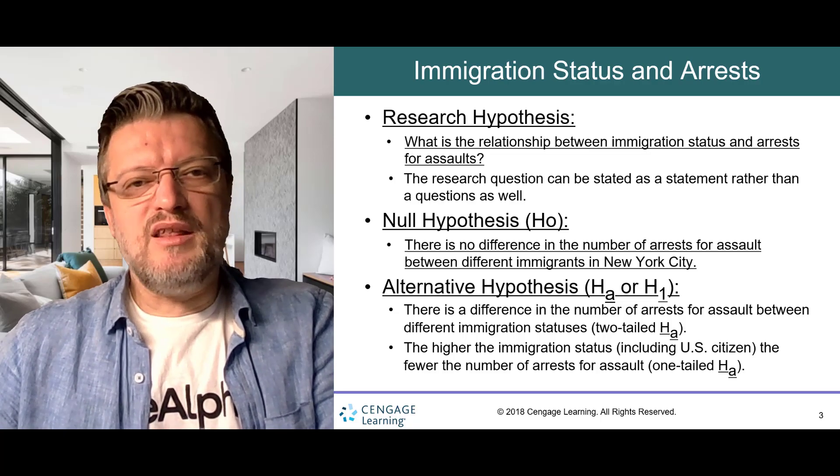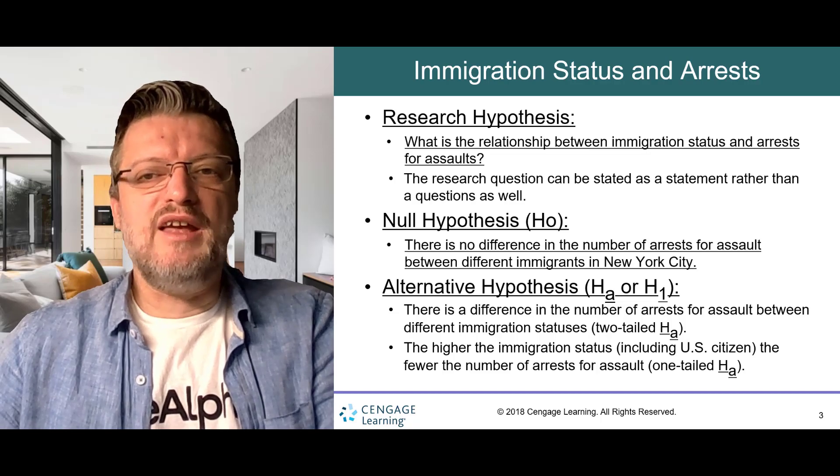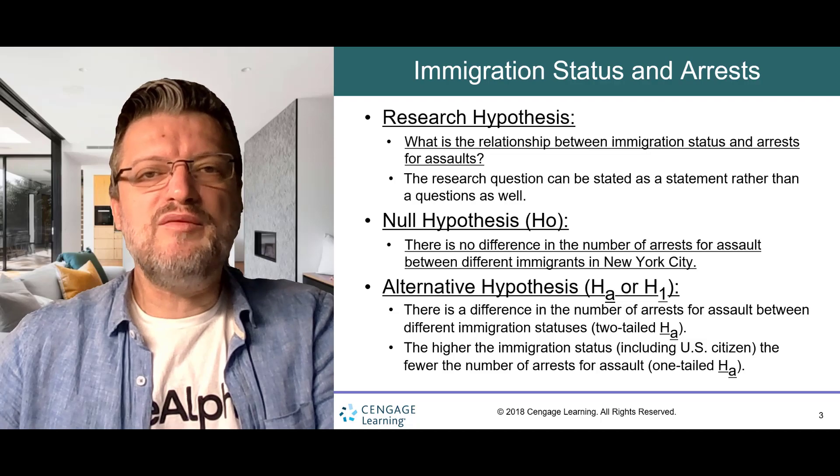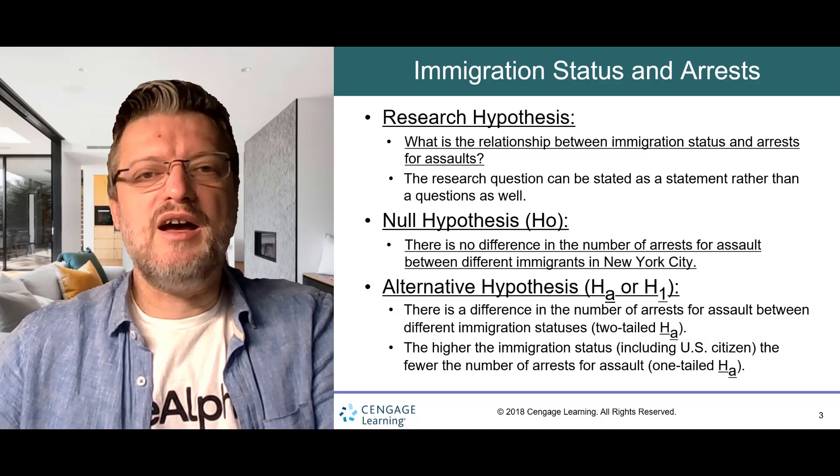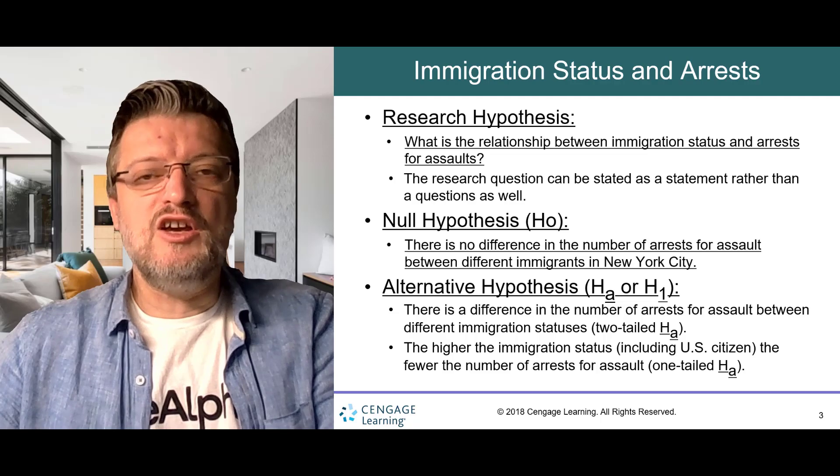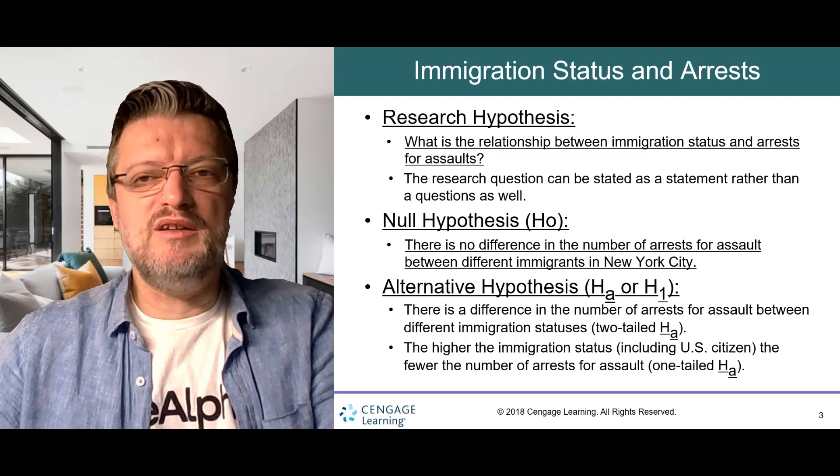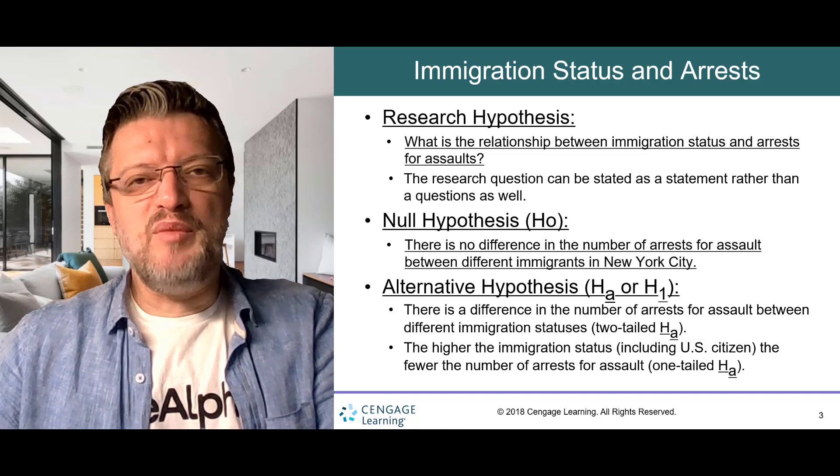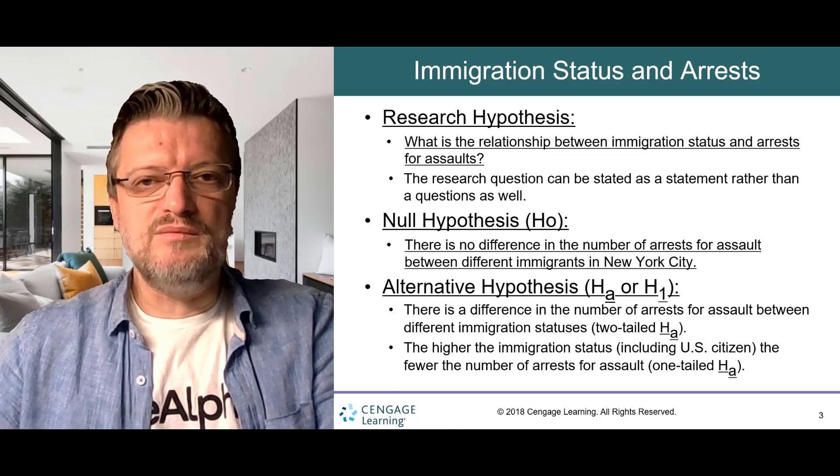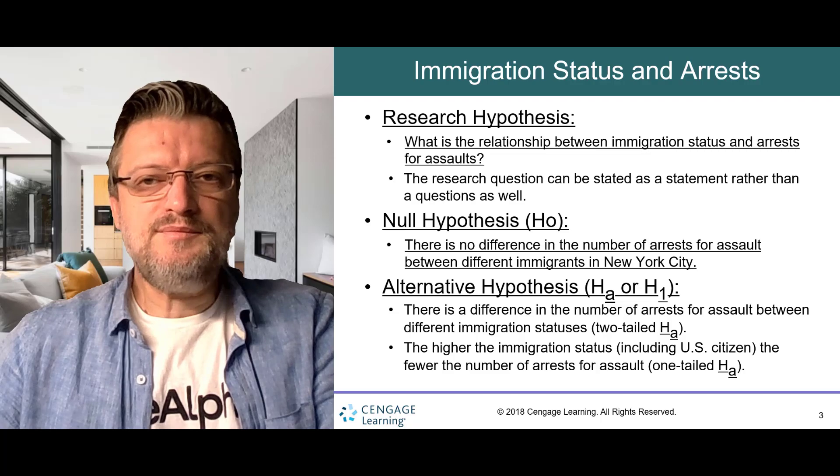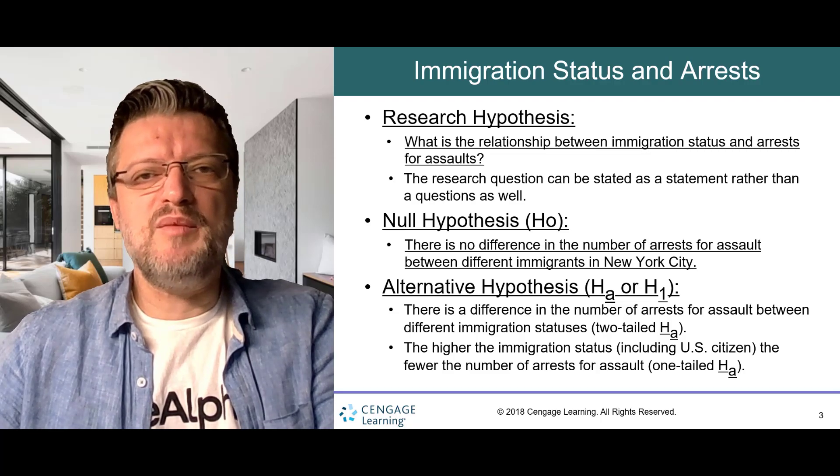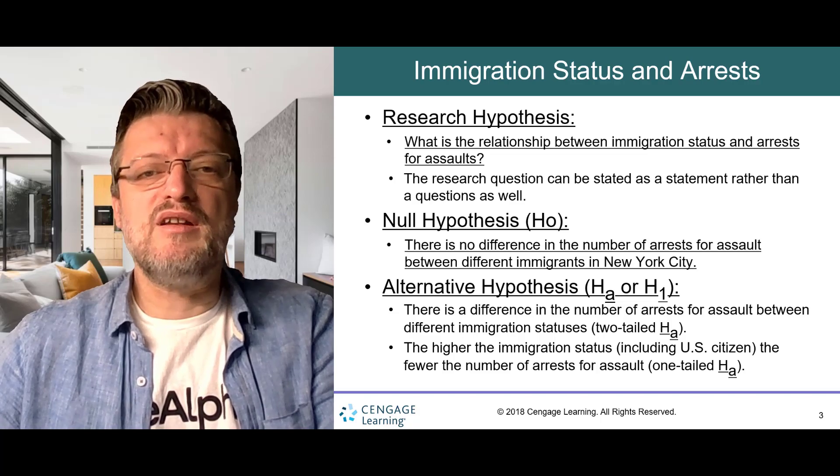The null hypothesis is a statement that generally states there is no relationship, no association, or no difference in the observed relationship. This is the hypothesis that we test using statistics and probability. In relation to our research question, the null hypothesis, denoted as H0, is there is no difference in the number of arrests for assault between different immigration statuses of immigrants in New York City.